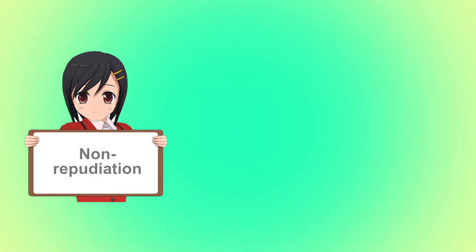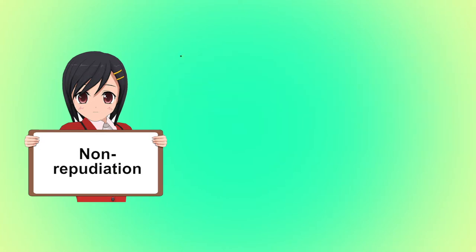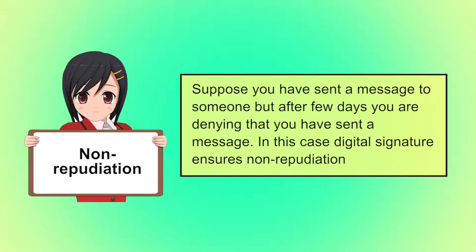The last is non-repudiation. Non-repudiation is the assurance that someone cannot deny something. A legal document typically requires witnesses to signing so that the person who signs cannot deny having done so. For example, suppose you have sent a message to someone, but after a few days you are denying that you sent it. In this case, a digital signature ensures non-repudiation. This will be discussed in later slides.